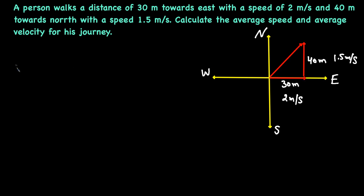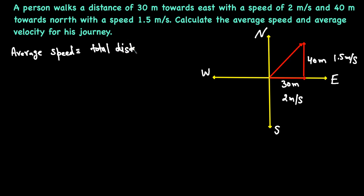We'll start with average speed. If you remember, average speed is total distance over total time taken. I covered the formulas for average speed and average velocity under different situations in my previous video. So average speed equals total distance over time taken.